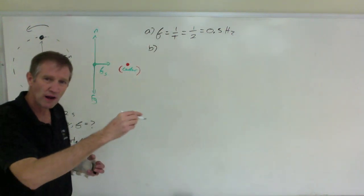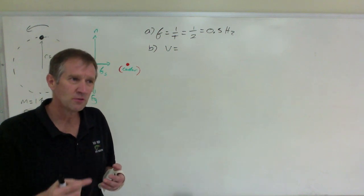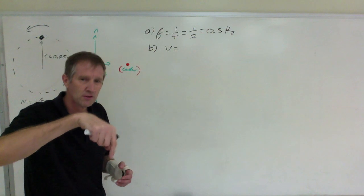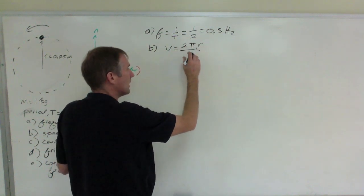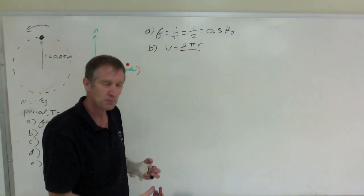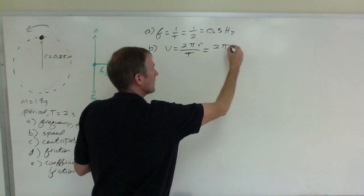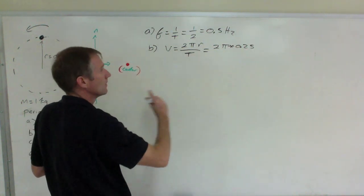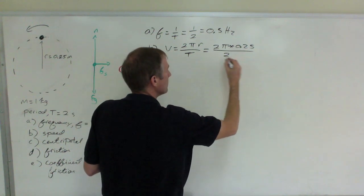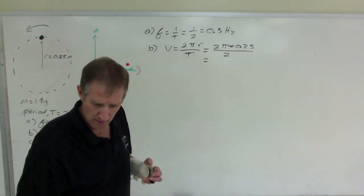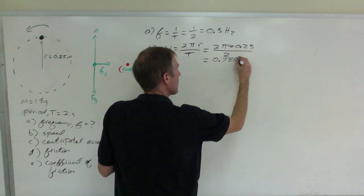The speed of the object — it's traveling at constant speed. Something going in a circle at constant speed: speed is just distance over time. The distance an object travels in a circle is the circumference, which is 2πr. The time it takes to go around once is the period. So speed equals 2 times pi times 0.25 (the radius), all over the 2 seconds it takes to go around once. That equals 0.785 meters per second.